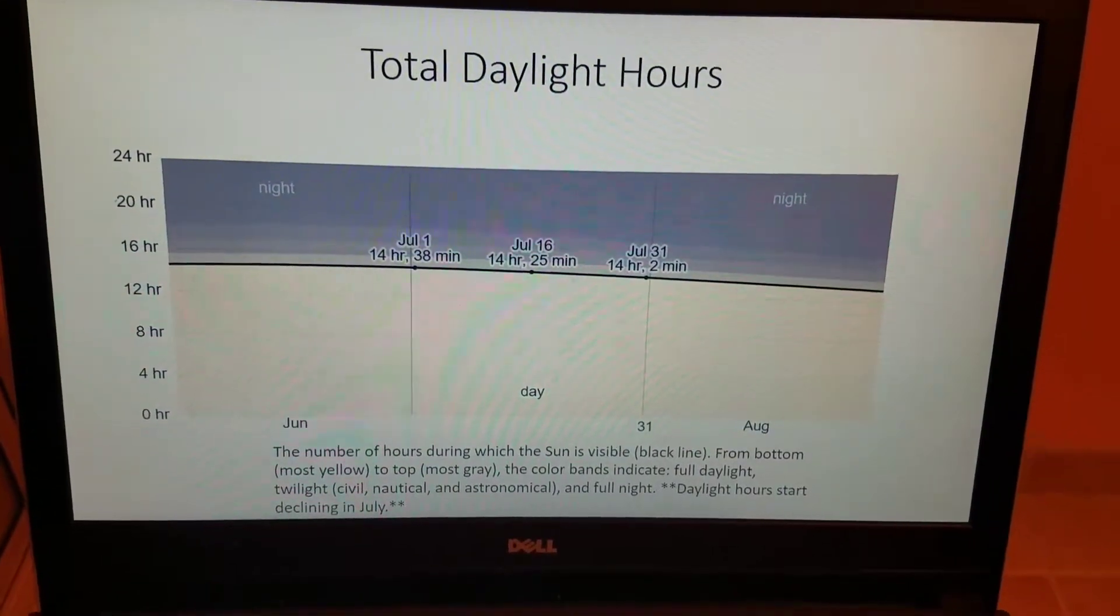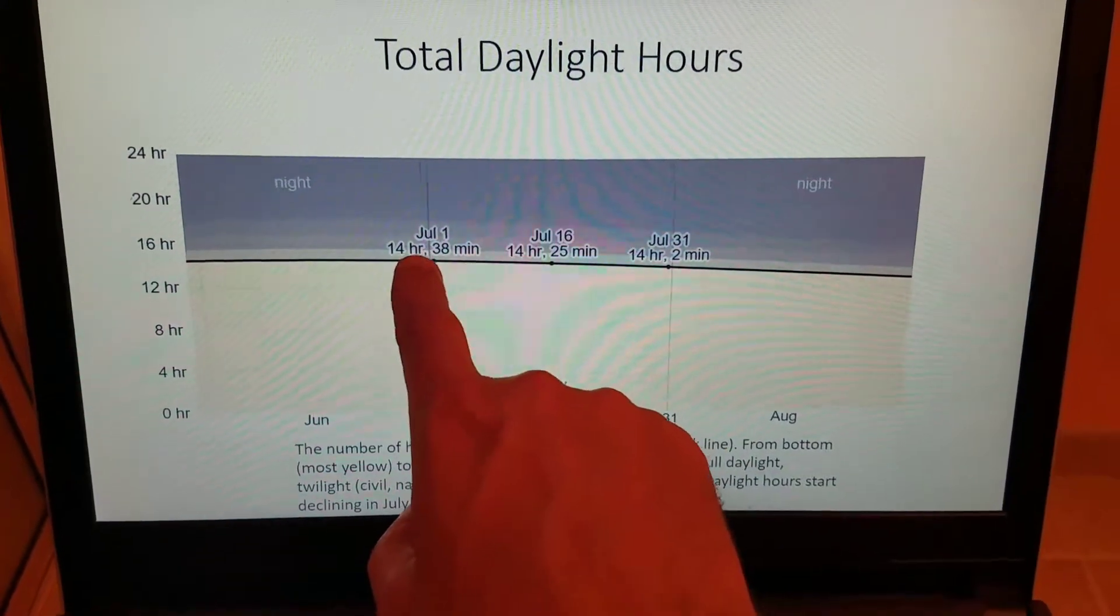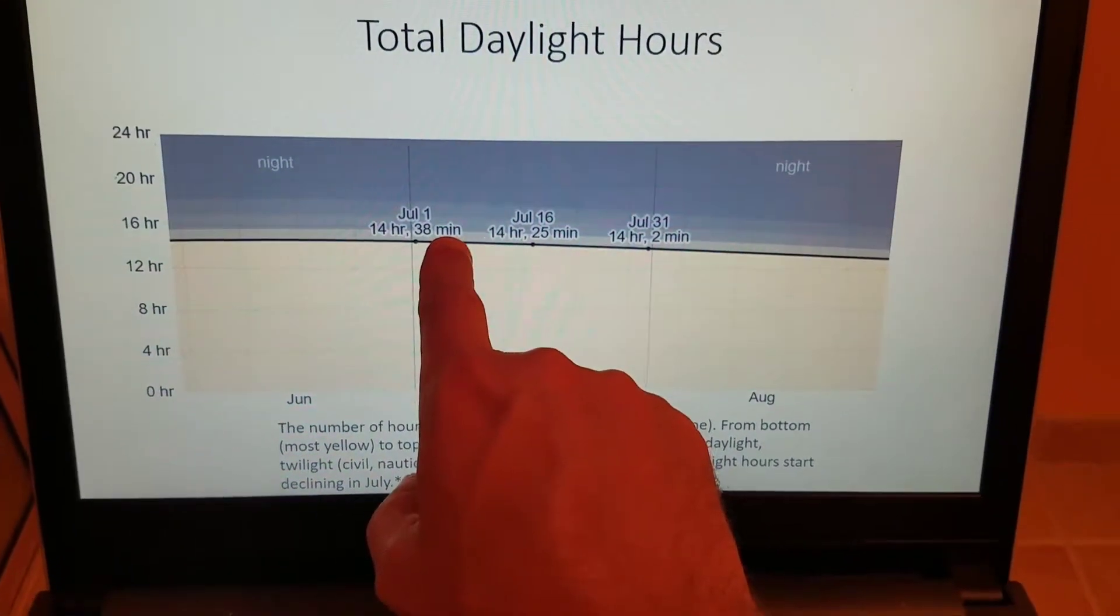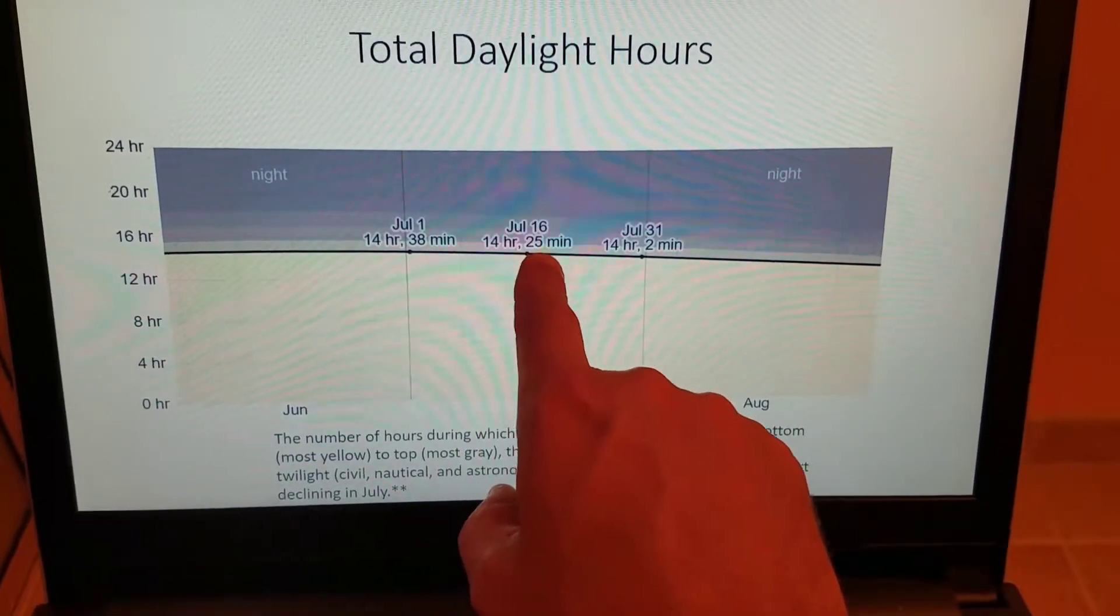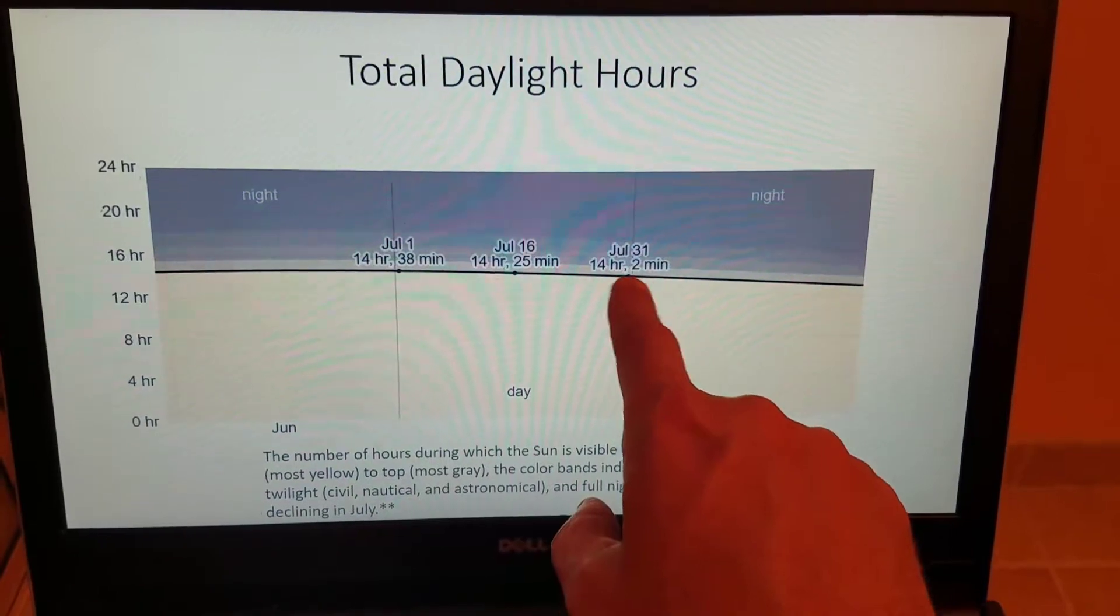Looking at the total daylight hours. We already hit the summer solstice on June 21st. Starting off on July 1st, we have 14 hours and 38 minutes of daylight. And as the month progresses, we slowly see the daylight hours decrease down to 14 hours and 2 minutes. So we lose about 36 minutes of daylight between the beginning and the end of the month, which really isn't very significant.